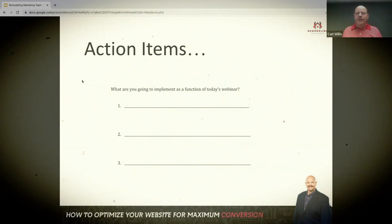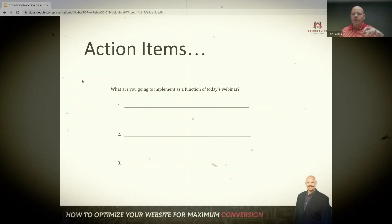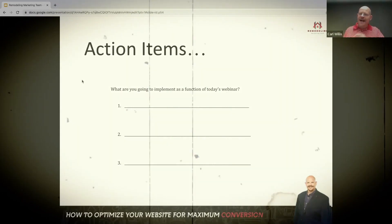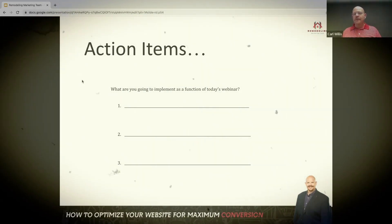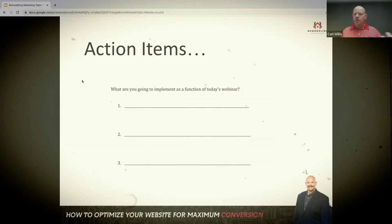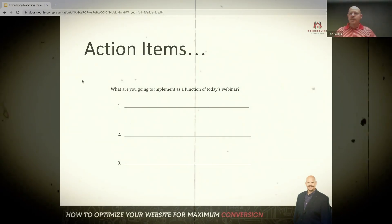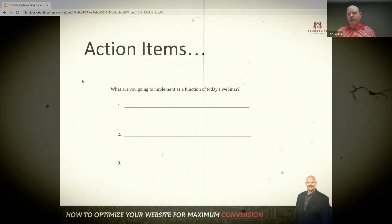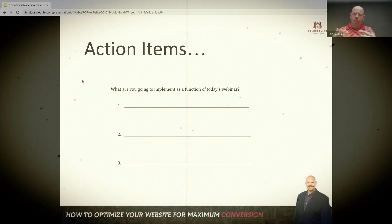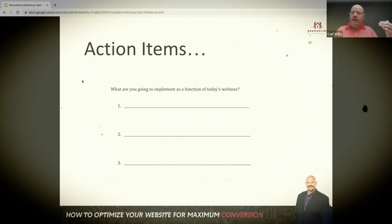Once you've got those written down, we're going to move on to one more big topic — the way we're seeing conversions optimized on the back end. Once you've captured that lead, what increases your ability to make that sale? There are a couple of tweaks you can make that will greatly improve those numbers. We've been talking about front-end conversion — how do we get more leads and phone calls from website visitors. Now we're going to talk about back-end conversion: once we've got that visitor's information captured, what steps can we take to increase profitability and effectiveness?